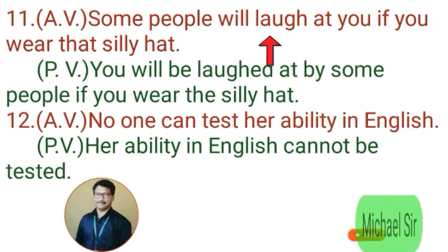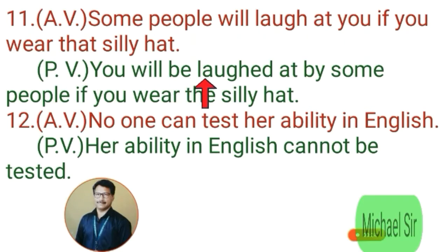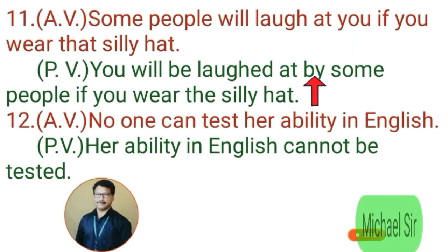Eleventh example. Active voice: 'Some people will laugh at you if you wear that silly hat.' This sentence is in simple future tense. 'Some people' is subject and 'you' is object. When we make passive voice, 'you' becomes subject, then 'will be' comes, then the third form of the verb 'laughed,' then the preposition 'at' comes as it is, then 'by some people.' The conditional clause remains as it is. Passive: 'You will be laughed at by some people if you wear the silly hat.'